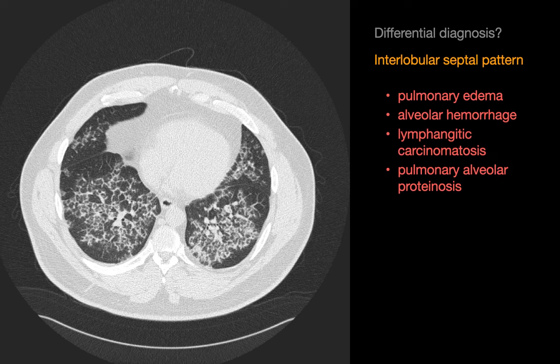This is our differential diagnosis for an interlobular septal pattern. As it turns out, ground glass opacities can be present with any of these four disorders, so the ground glass opacities don't help that much in pruning our differential diagnosis down. One comment about the first item on this list: pulmonary edema.